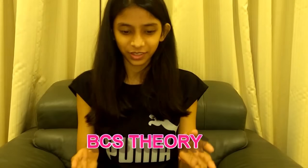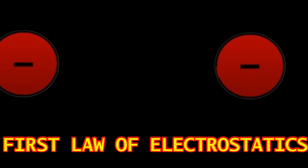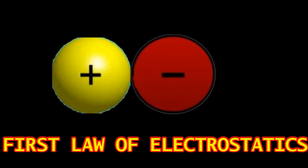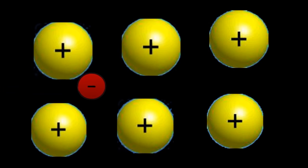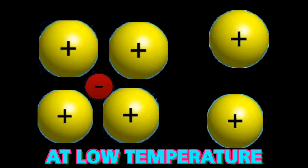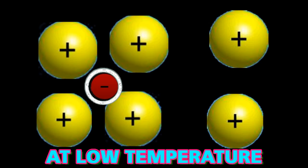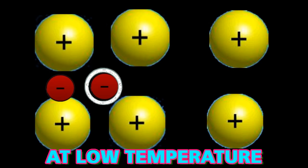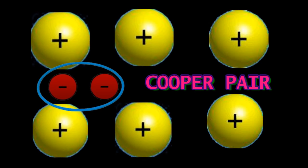Thanks to scientists John Bardeen, Leon Cooper, and John Schrieffer who brought BCS theory to us. Now we all know like charges repel each other and unlike charges attract each other. Inside the wire, an electron attracts the positive charges, which results in an increase in positive charge density in the vicinity of the electron. And this positive charge density attracts another electron, which results in the formation of Cooper pairs.